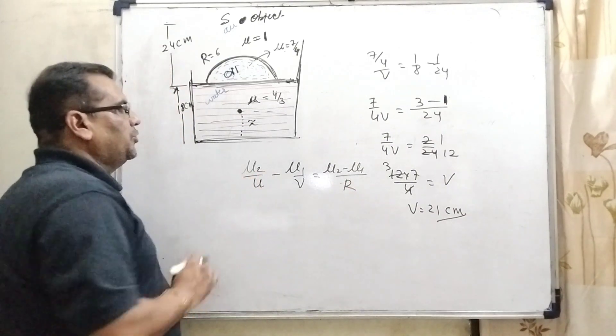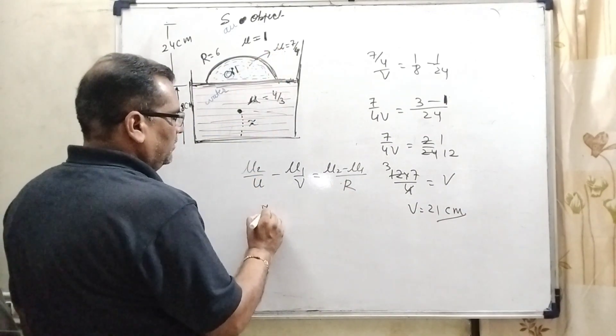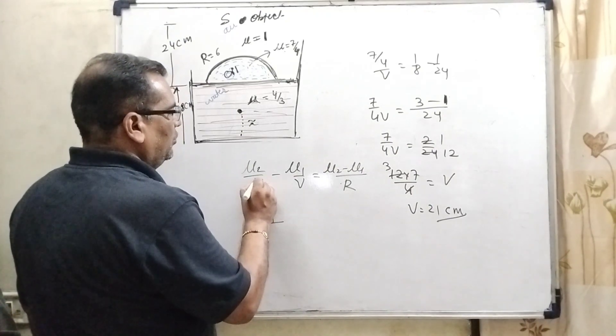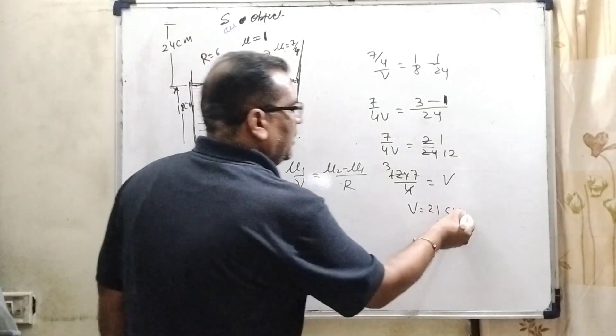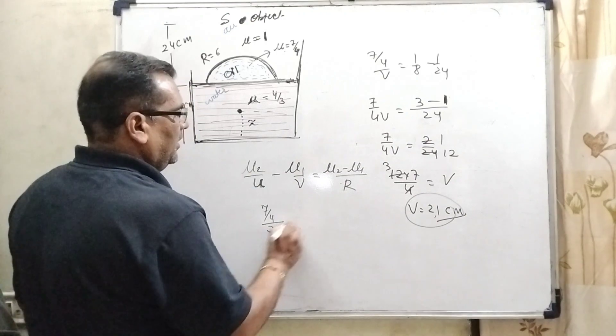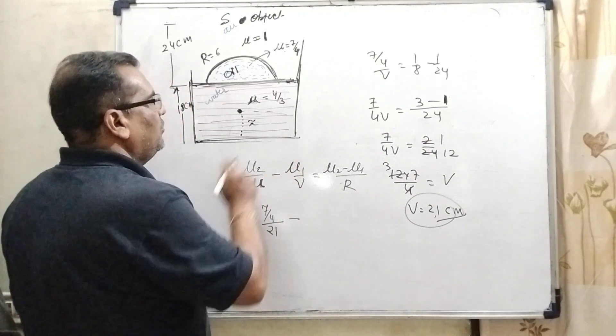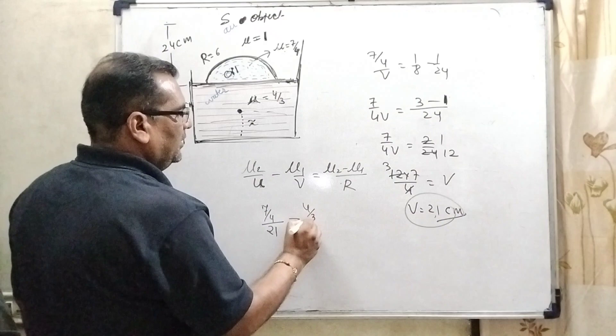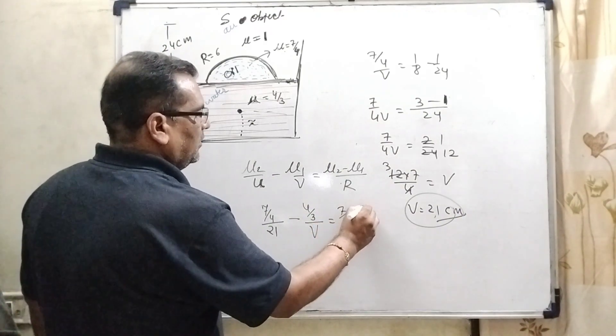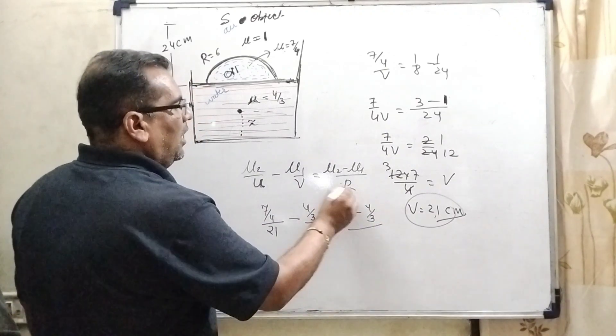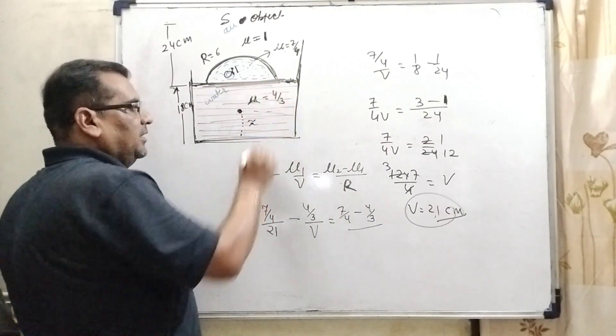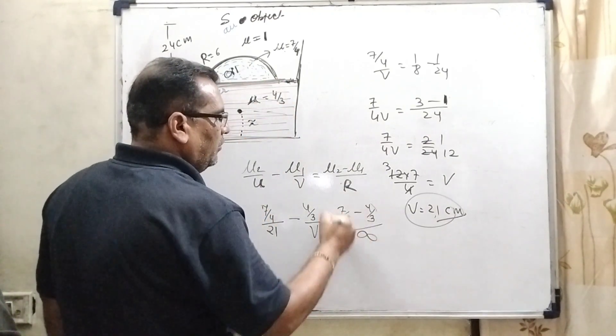Here, mu 2, what is mu 2 given? That is 7 by 4. And here U, this image works as an object. So therefore, we substitute this value 21 minus, what is mu 1? Mu 1 that is 4 by 3 V and 7 by 4 minus 4 by 3 R. Here, very interesting thing, R for this plane surface that is infinity. So whole value becomes 0.